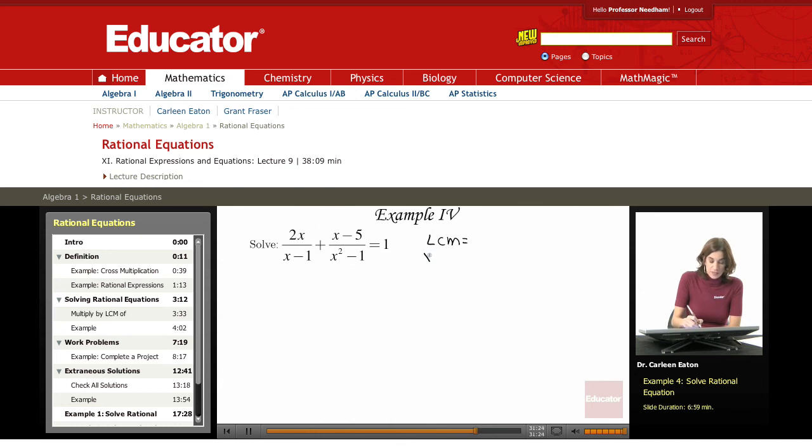So I have the first denominator is x minus 1. The other denominator is x squared minus 1. The difference of two squares equals x minus 1, x plus 1.